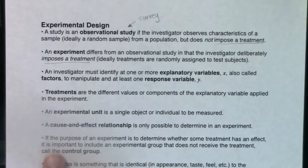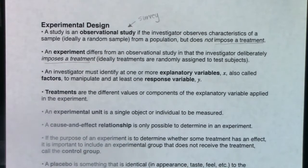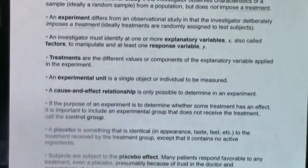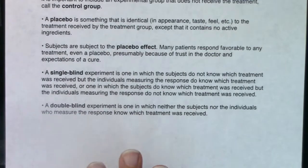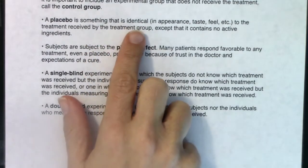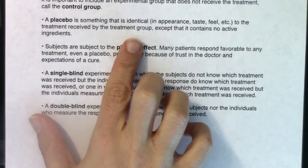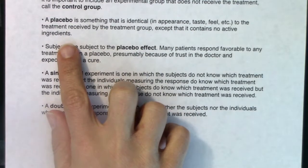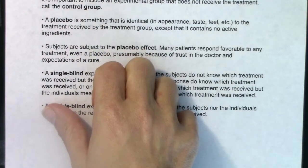If the purpose of an experiment is to determine whether some treatment has an effect, it's important to include a group that does not receive the treatment, which we call the control group. Sometimes the control group receives no treatment at all, and sometimes it receives something called a placebo. A placebo is something identical in appearance, taste, and feel to the treatment received by the treatment group, except it contains no active ingredients.